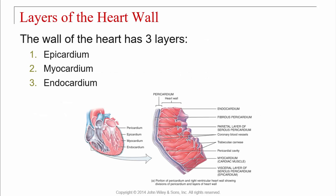There are three layers to the heart wall itself. We have the epicardium — 'epi' means outside, like your epidermis is above your dermis, so it's the outermost layer. Now, just to clarify, the epicardium is the visceral layer of the serous pericardium. So the visceral layer of the serous pericardium and the epicardium are the same thing.